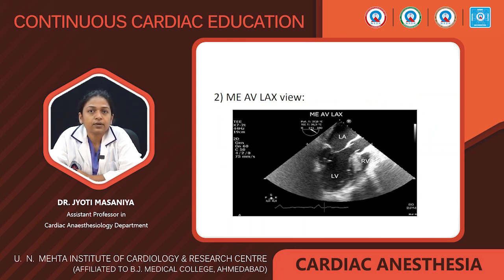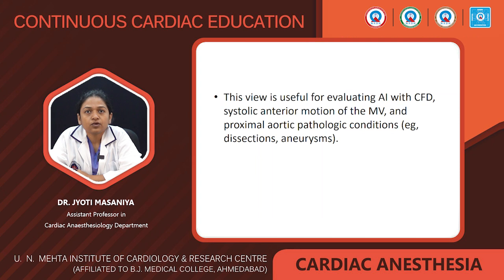The second view is the mid-esophageal aortic valve long axis view. This view is obtained by rotating the multiplane angle to 120 to 160 degrees from the mid-esophageal four-chamber view. In this view, you can see the LVOT, aortic valve annulus, aortic leaflets, sinus of Valsalva, sinotubular junction, and the proximal ascending aorta. This view is useful for evaluating aortic insufficiency with colour flow Doppler, systolic anterior motion of the mitral valve, and proximal aortic pathology such as aortic dissection and aneurysm.